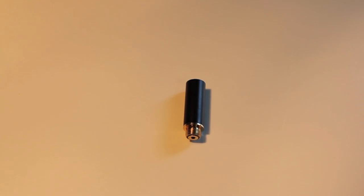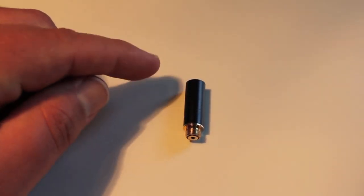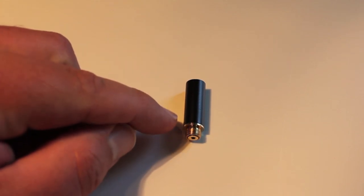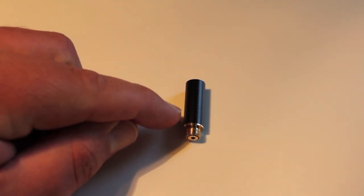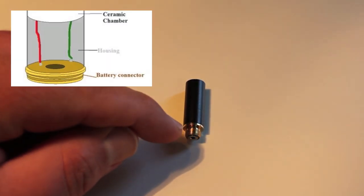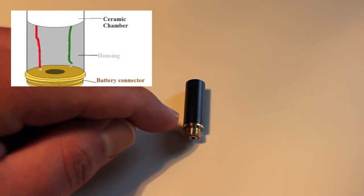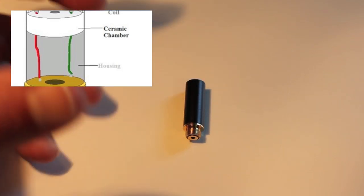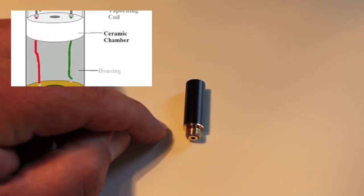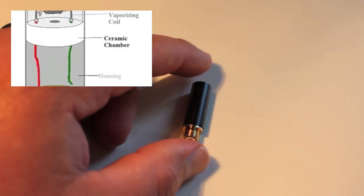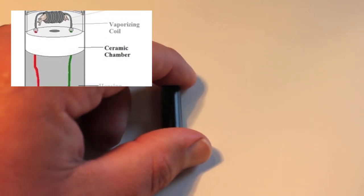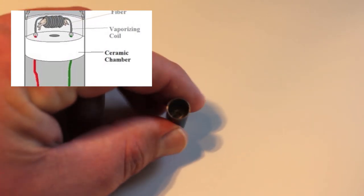So basically the atomizer, same as a cartomizer without the cartridge built into it. There's a coil in here at the bottom and the wires run up. When we power the battery or the unit, it heats up the heating element inside the coil and creates a vapor in the liquid. So basically an atomizer is close to the same thing as a cartomizer without the cartridge that holds the juice.